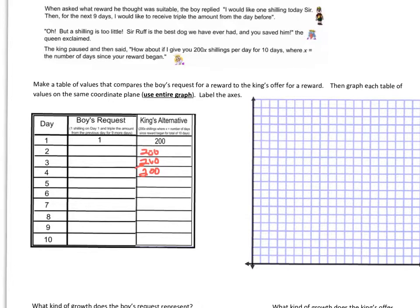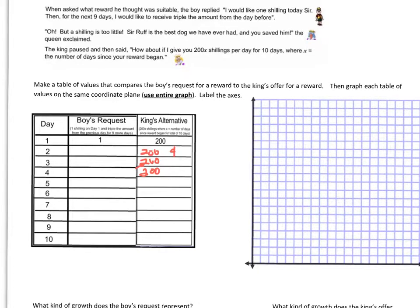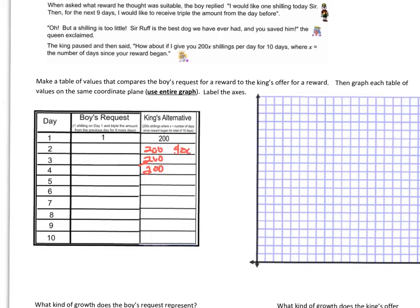This of course adds up day after day. This would be 400. This would be 600. 800. A total of 1000 by day 5. A total of 1200 by day 6. 1400. 1600. 1800. And he has a grand total of $2,000 by the end of 10 days.